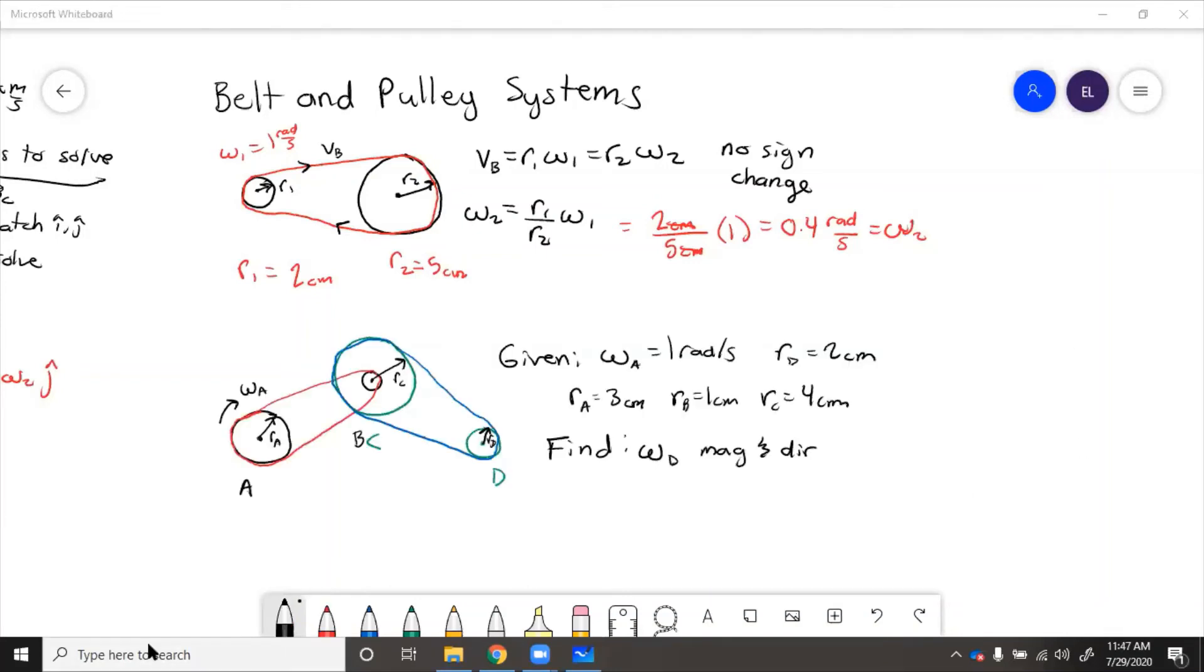In this problem, we have a complex belt and pulley system. We are given the size of each pulley and the input speed, and we need to figure out output speed, magnitude, and direction.